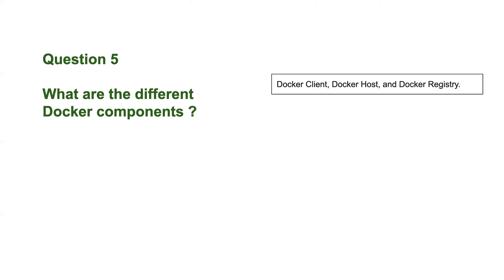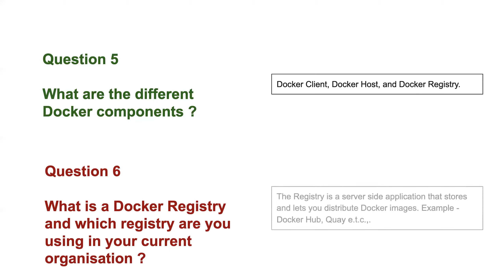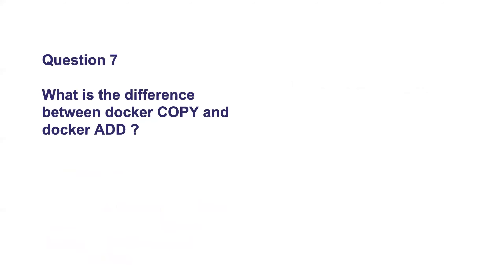The Docker registry is used to host images. If you create a Docker image and want to share it with others, there needs to be a common place — that's a Docker registry. Examples include Docker Hub and Quay.io. Depending on your organization's needs, you can use public registries or create an internal registry to store secured images.